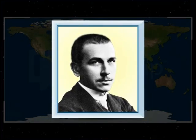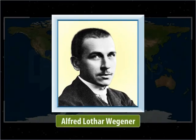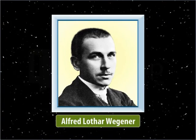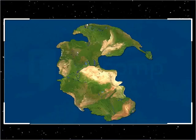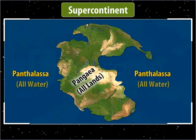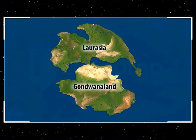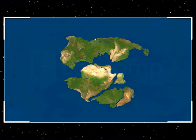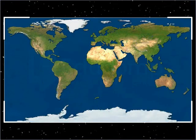The idea of moving continents gathered dust until 1912, when a 32-year-old German polar researcher, geophysicist and meteorologist named Alfred Lothar Wegener reintroduced it in his article as the Continental Drift Hypothesis. According to Wegener, all present continents were once joined together as a single continental mass, collectively known as a supercontinent called Pangaea, meaning 'all lands' in Greek. He further stated that a megaocean called Panthalassa, meaning 'all water,' surrounded Pangaea.